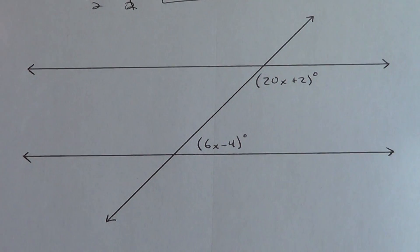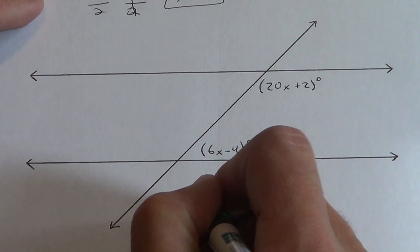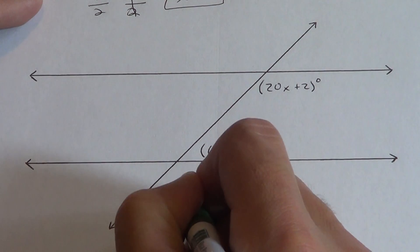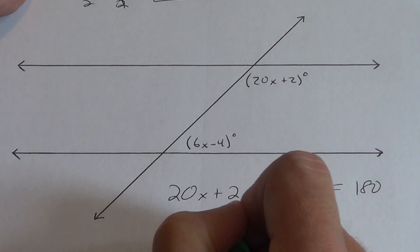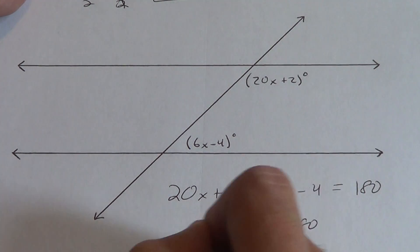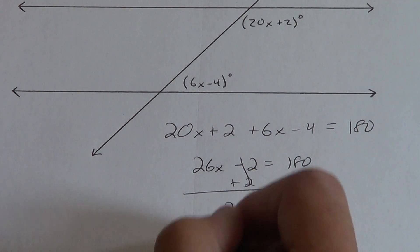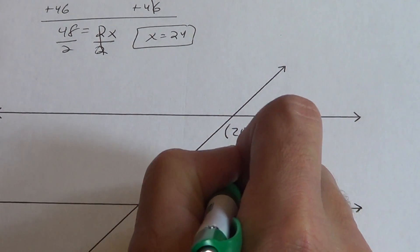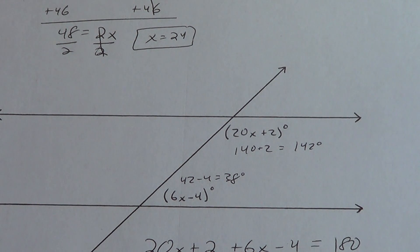Remember: if the alternate exterior angles are congruent, then the lines are parallel — so if x equals anything other than 24 we don't have parallel lines. Now the second example: copy it down. If you set these angles equal to each other you're going to get it wrong. Why? Because they're on the same side of the transversal — they're consecutive interior angles, which have to be supplementary and add to 180. Combining like terms: 26x − 2 = 180. Add 2: 26x = 182. Divide by 26: x = 7. Check: 6(7) − 4 = 38 degrees, 20(7) + 2 = 142 degrees, and 142 + 38 = 180. It works.